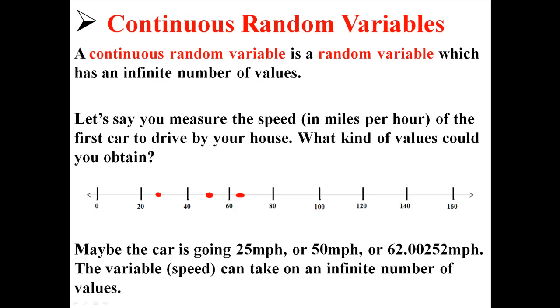Well, you could get something like 25 miles per hour or 50 miles per hour or 62.00252 miles per hour or something even faster or slower than that. There are an infinite number of values this variable could take on because it is a continuous random variable.